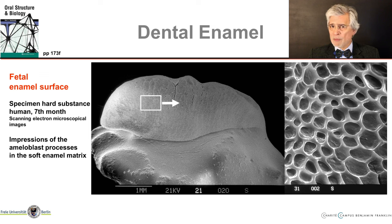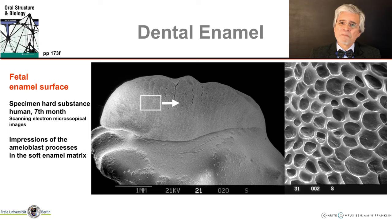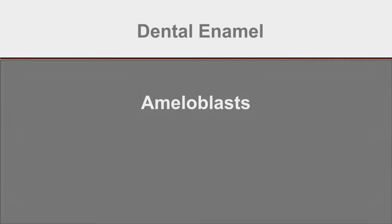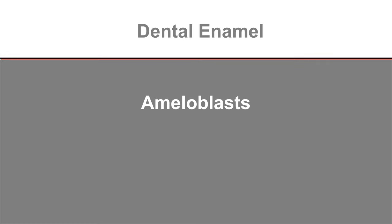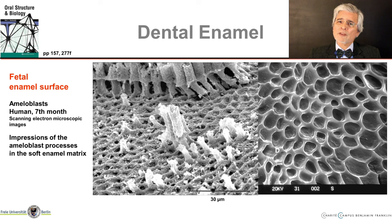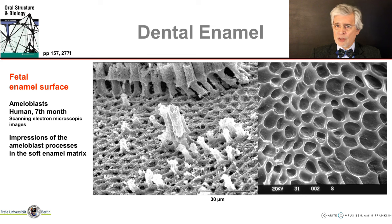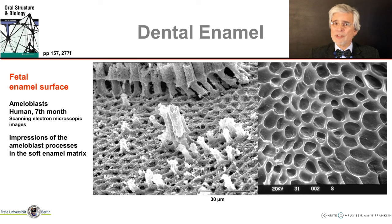We will address the problem of the various outlines a bit later in this lecture. Here we can also see the ameloblasts themselves — in the left picture at the upper edge, they are all lined up next to each other. Further down, you can see some individual ameloblasts and their impressions, which they have just left in the still soft enamel matrix.